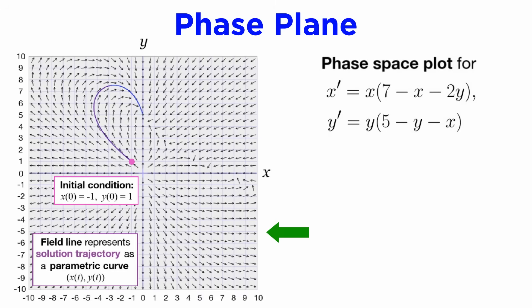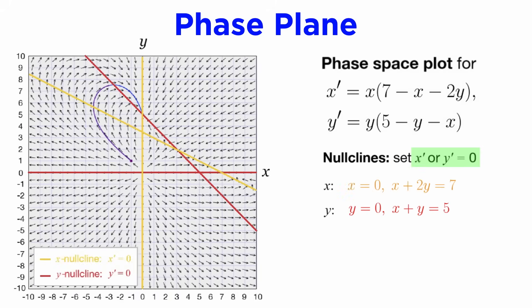For example, here is the phase plane vector field for this non-linear system of DEs. The regions where dx dt and dy dt are zero, meaning the trajectory is stationary in that direction, are shown in red and yellow, and these are called the null clines of the system.